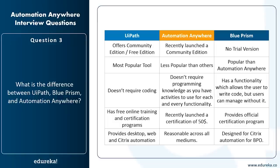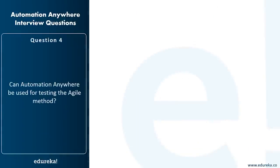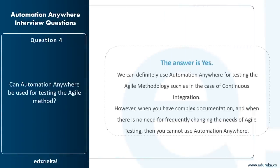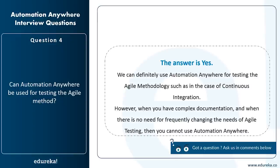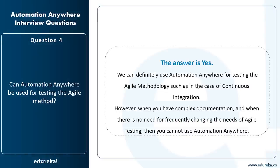Can Automation Anywhere be used for testing the agile method? Yes, we can definitely use Automation Anywhere for testing the agile methodology, such as in continuous integration. However, you cannot use Automation Anywhere when you have complex documentation and when there's no need for frequently changing agile testing requirements. So it is useful for continuous integration scenarios, but not advisable when documentation is complex and requirements don't change frequently.